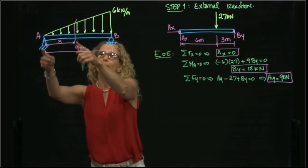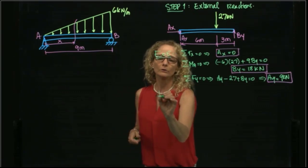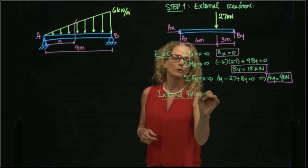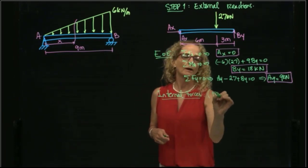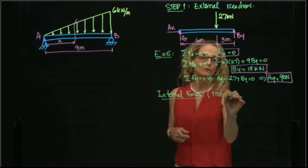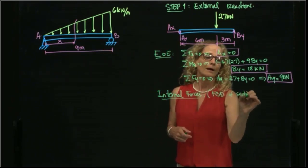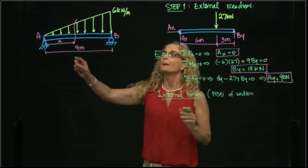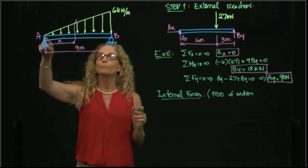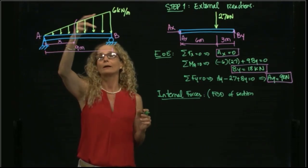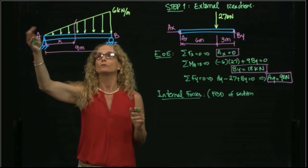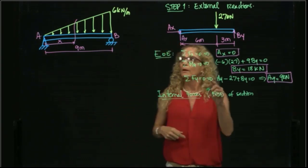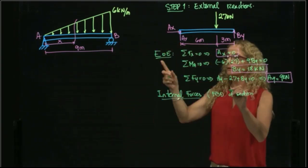I will draw the left side of my cut. So for the internal forces, I will draw the free body diagram of the section. In this case, I can draw either the left side or the right side. I will draw the left side, because sometimes it's easy to manage a triangular or linear distributed force from the skinny side of the triangle.